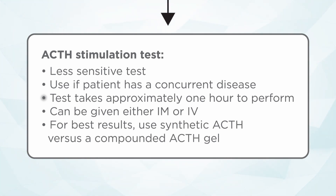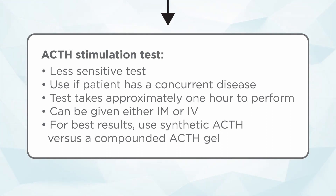The other advantage of the ACTH stimulation test is that it's short — it only takes one hour to perform. You can give the ACTH IM or IV; however, IV is usually more accurate. I would recommend using synthetic ACTH rather than a compounded ACTH gel because it tends to give more accurate results, and that's absolutely accurate for diagnosing Cushing's disease in a dog. With the ACTH stimulation test, what you're looking for is an exaggerated response to the ACTH you're injecting. The reference ranges for cortisol will vary depending on the lab or point-of-care machine you use, but you're looking for something above the normal level you would see when you inject ACTH.